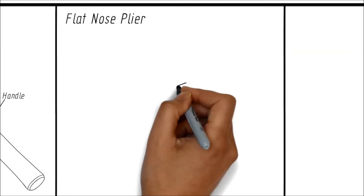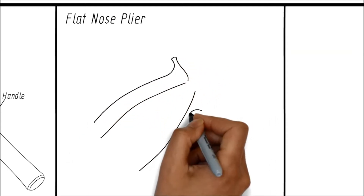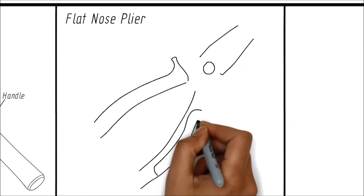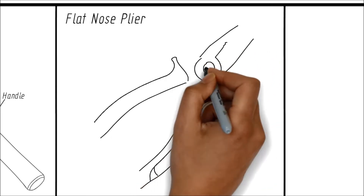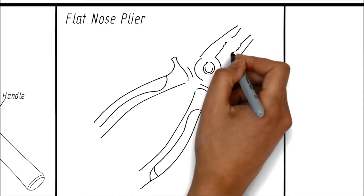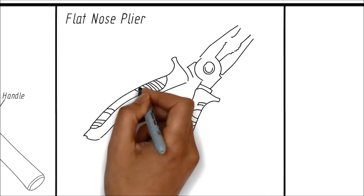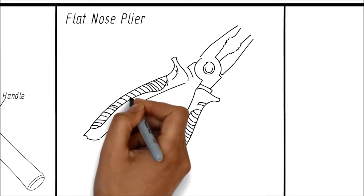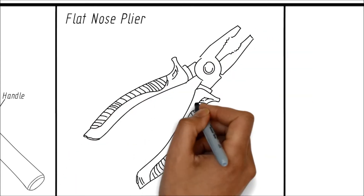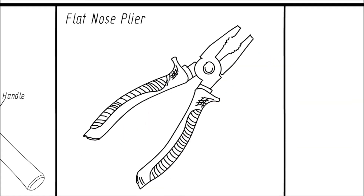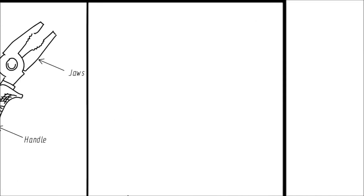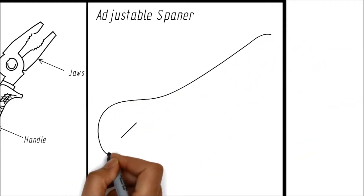Next we go on to a flat nose plier. Please see the way the flat nose plier is drawn. Let us now put the parts — this is the handle and the jaws. Next we have an adjustable spanner, which looks something like this.